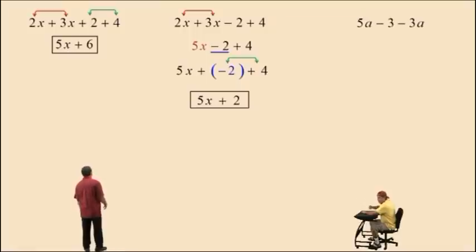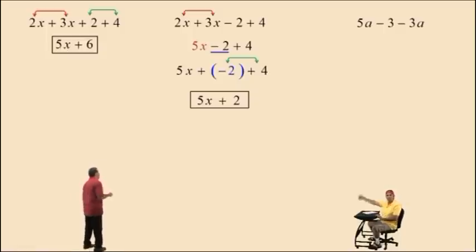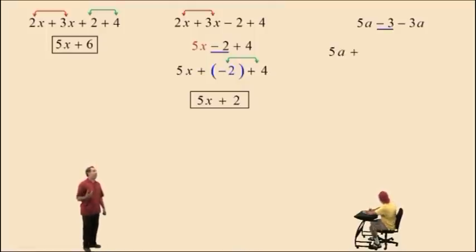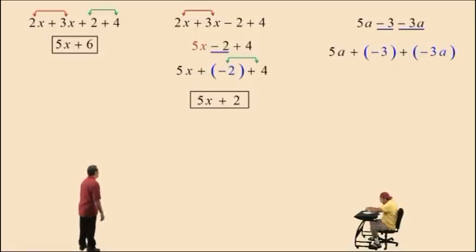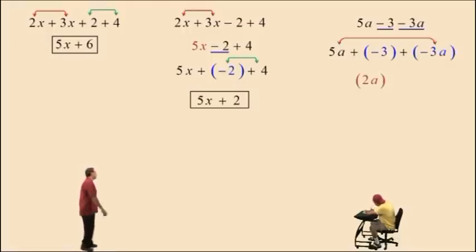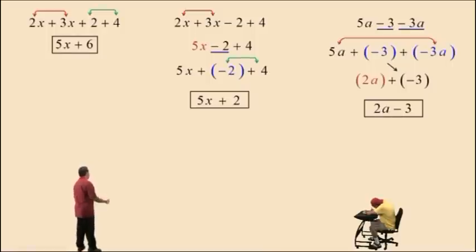All right Charlie, let's do another one here: 5a subtract 3 subtract 3a. Again, we have subtractions, and we're supposed to go left to right, but you cannot combine 5a subtract 3. So we rewrite this as 5a plus a negative 3 plus a negative 3a. Now we have everything being added so we can go out of order. 5a plus a negative 3a is 2a, and bring down our work plus a negative 3. Adding a negative 3 is the same as subtracting a positive 3. So our answer is 2a subtract 3.